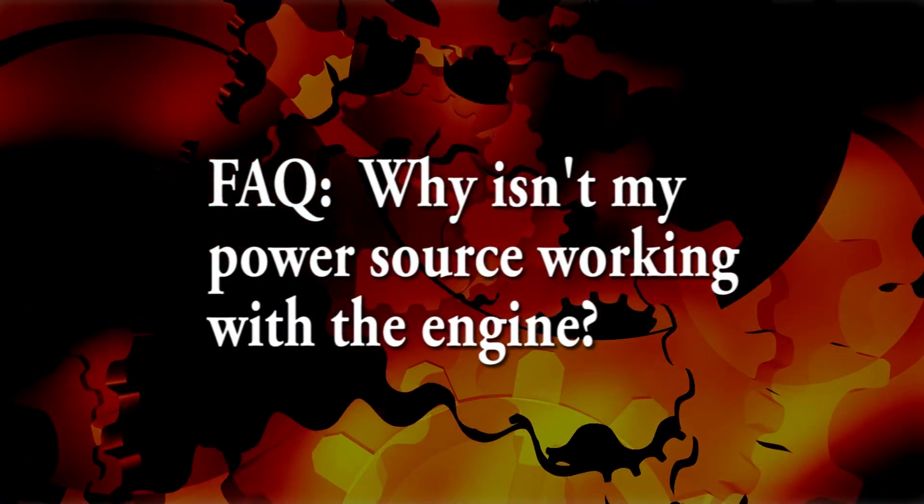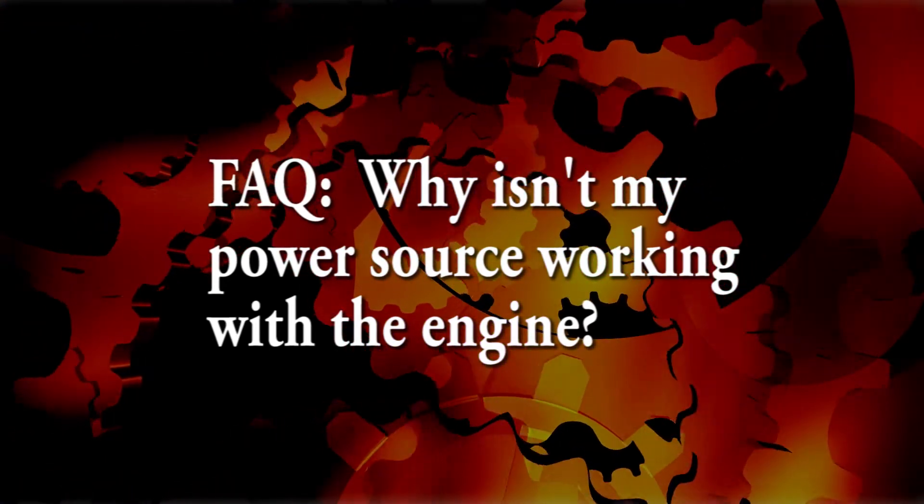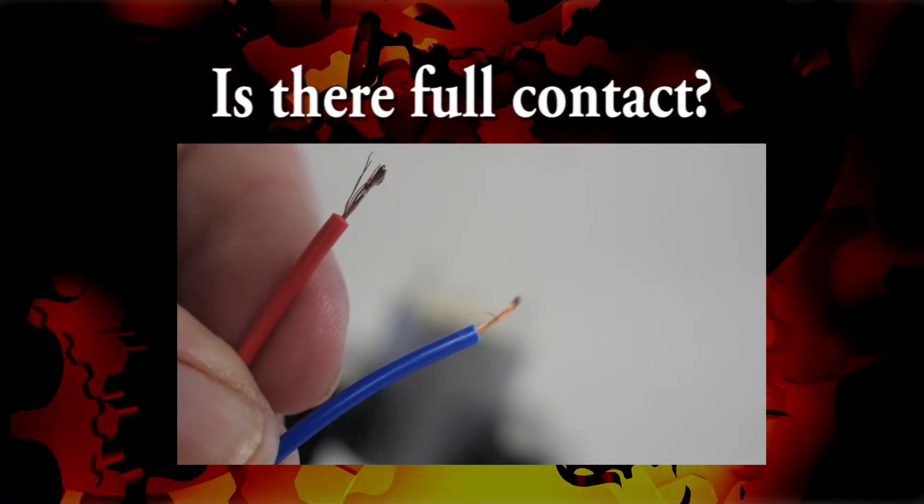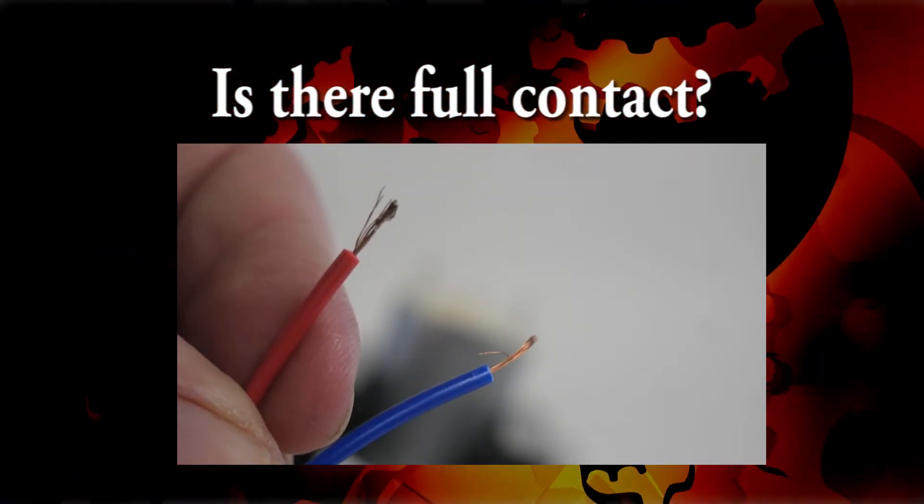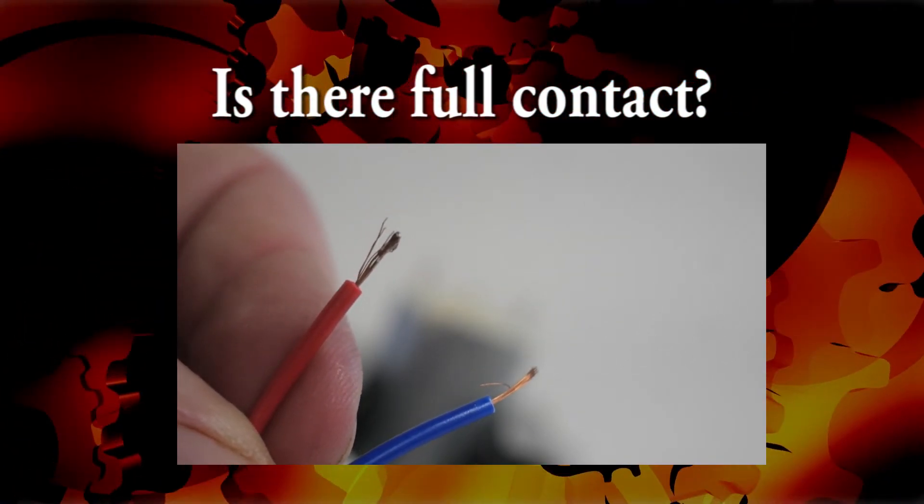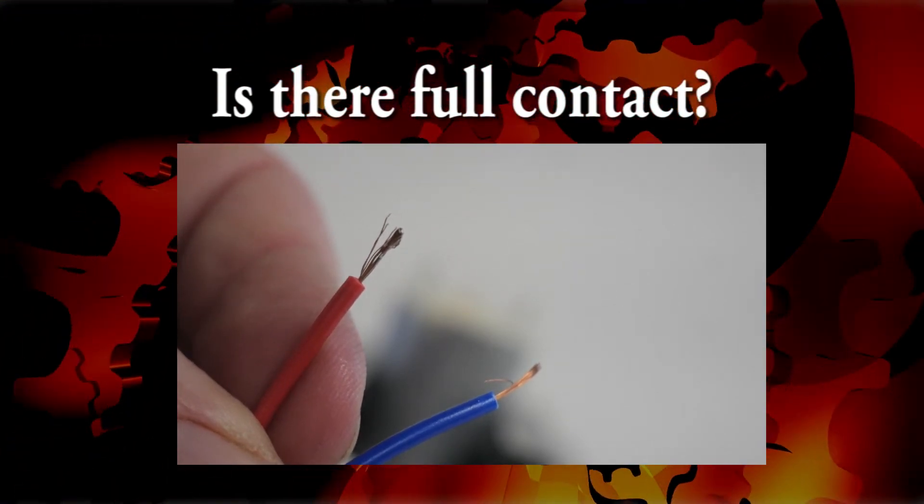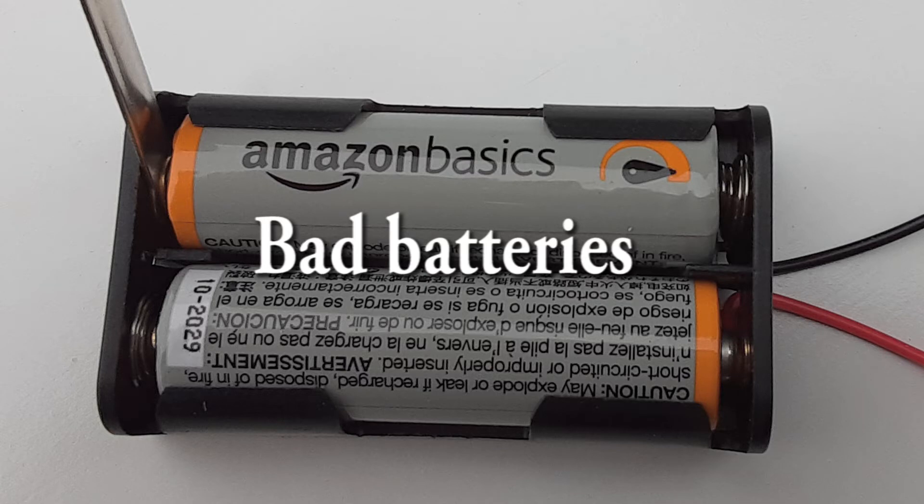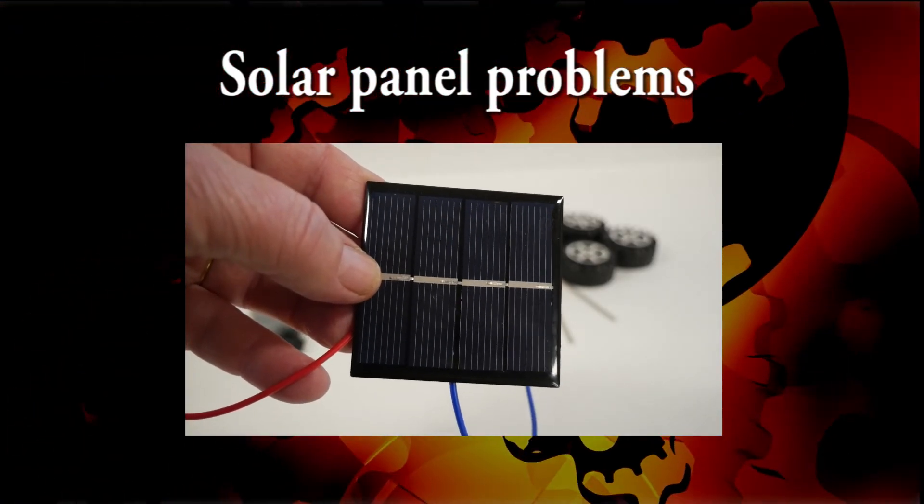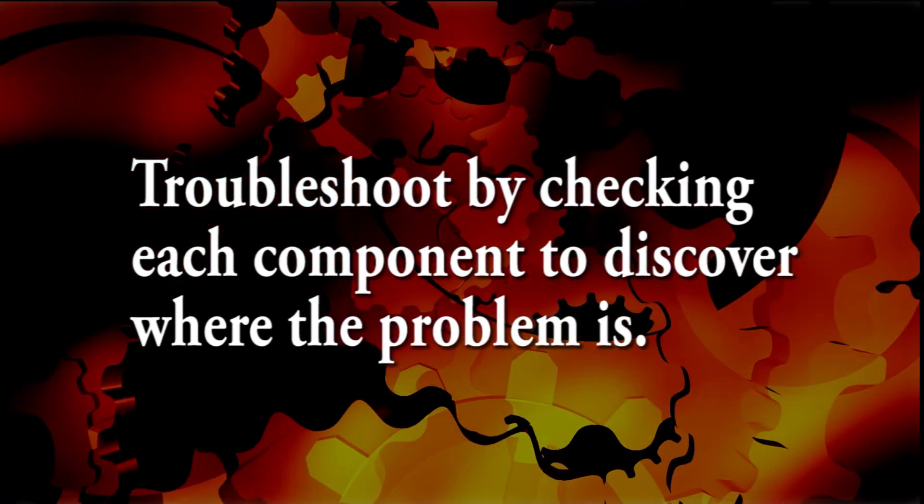A frequently asked question might be, why isn't my power source working with the engine? The answer: you may not be getting full contact between the power source and the engine. This could be frayed leads on the wire, which means only a few of the many tiny wires in your lead wire are contacting directly with the terminals on the engine or something else. Your batteries may be bad, your solar panel may be flawed or broken. You will need to work through each step to see where the problem actually lies.